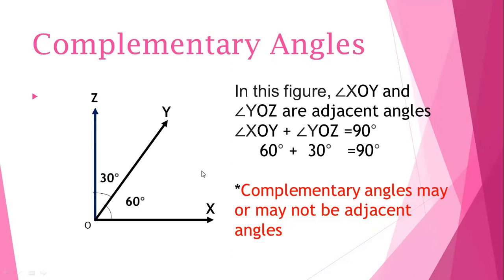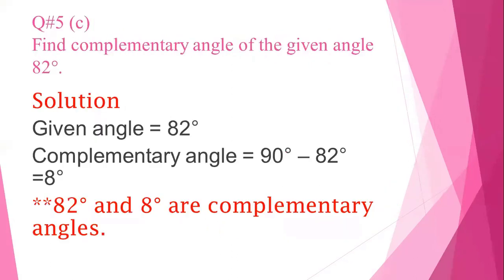These complementary angles may or may not be adjacent angles. Now let us find the complementary angle of the given angle 82 degrees. The given angle is 82 degrees and we need to find the other angle. We know the sum of the two angles should be 90 degrees. To find the complementary angle, we subtract 82 from 90 and we get 8 degrees. So 82 degrees and 8 degrees are complementary angles because when we add them, we get 90 degrees.